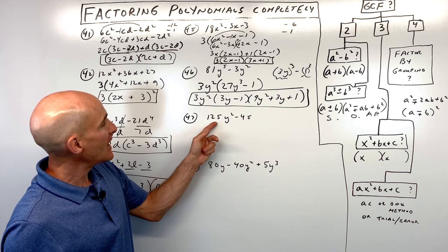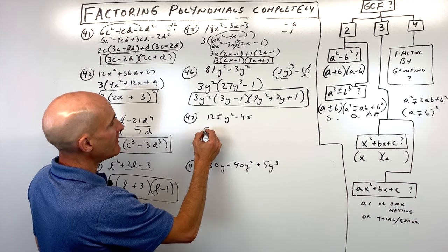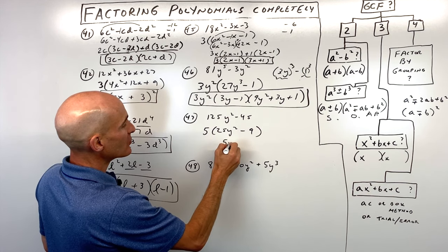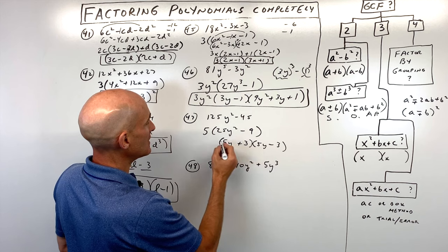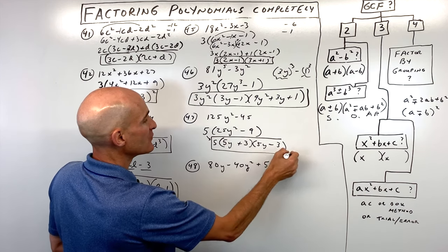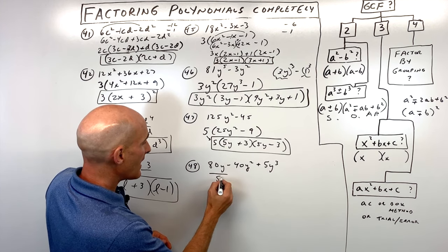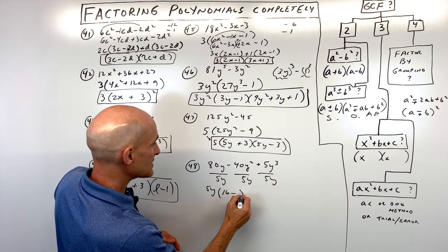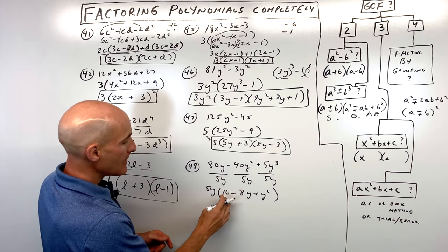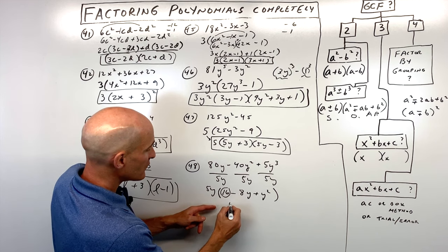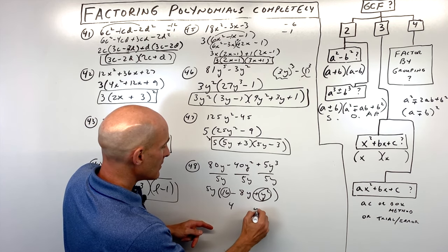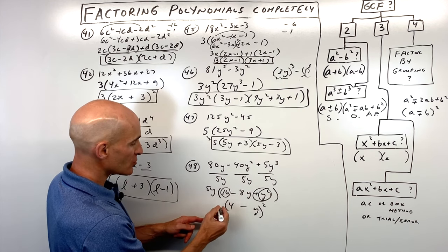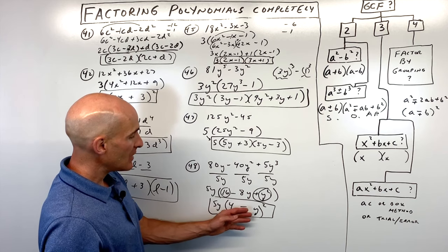Number forty-seven: factor out a 5, giving 5 times 25y squared minus 9. This is a difference of two squares, so factor as 5 times 5y plus 3 times 5y minus 3. Number forty-eight: factor out 5y, giving 5y times 16 minus 8y plus y squared. Notice this is a perfect square trinomial — 4 times 4, y times y, and 4 times y is 4y doubled is 8y. So 5y times 4 minus y quantity squared — fully factored.